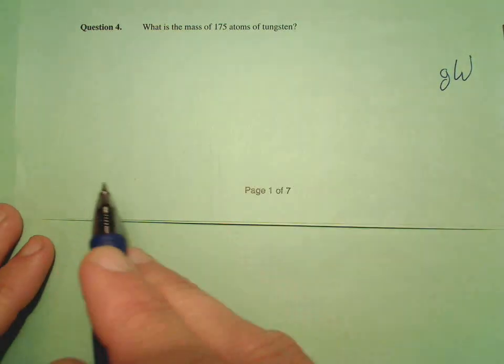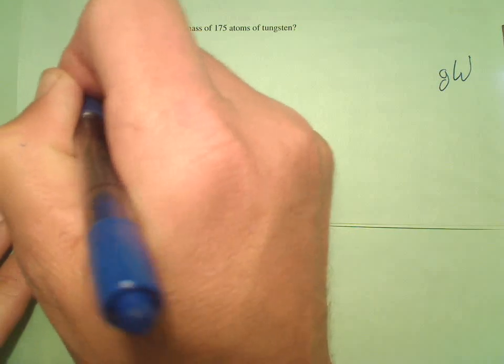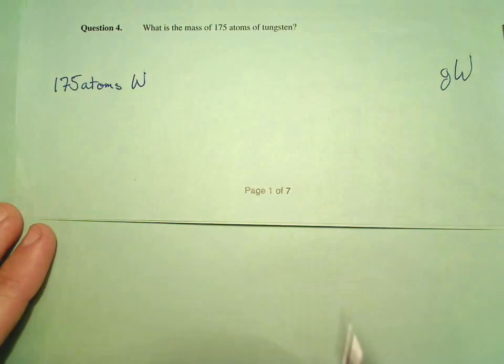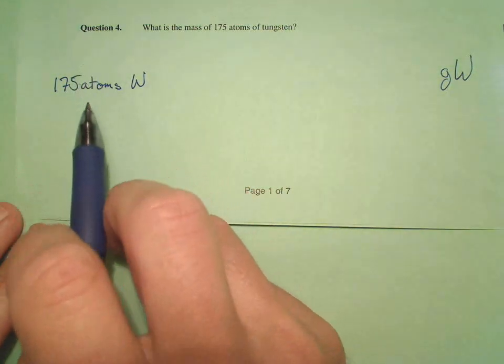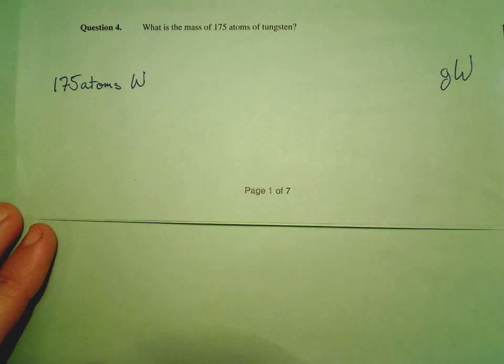Now, we only have one place here, 175 atoms to start. So, 175 atoms of tungsten. And remember, atoms of tungsten, those are particles. So we're going from particles to grams.